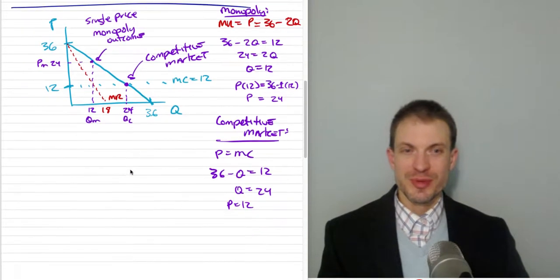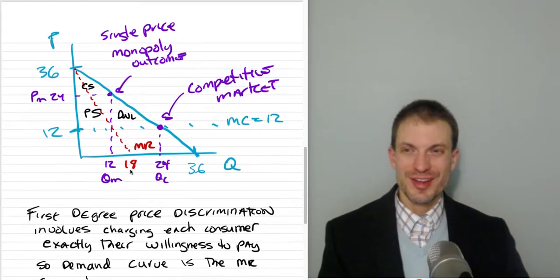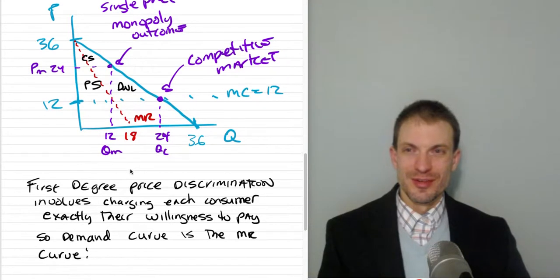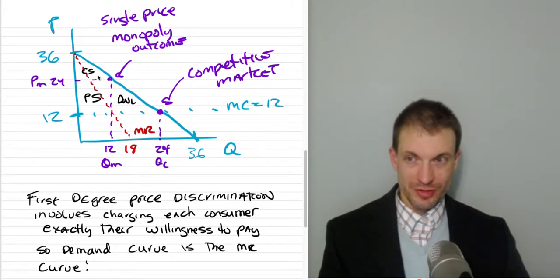That's what a single price monopolist does, but I want to tell you about first-degree price discrimination. What happens then? Well first let's have our comparison. Here's exactly what I said before.